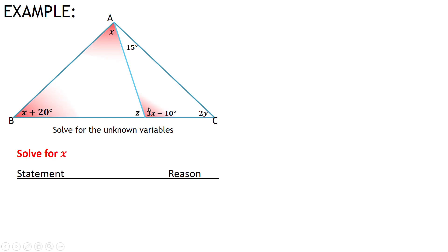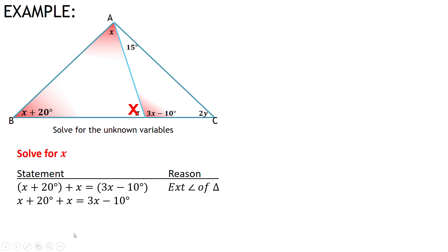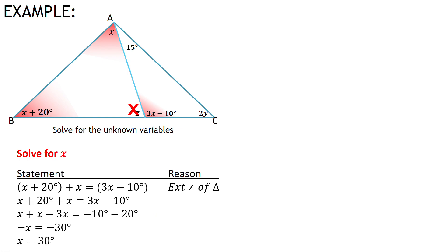The exterior angle of a triangle — so 3x minus 10 — is equal to the sum of the opposite interior angles: x plus x plus 20. It has nothing to do with that adjacent angle. So my statement is: x plus x plus 20 equals 3x minus 10. Reason: exterior angle of triangle. Drop the brackets, get like terms: x plus x minus 3x equals negative 10 minus 20. Working that out, negative x equals negative 30, so divide through by negative 1 to get x equals 30 degrees.